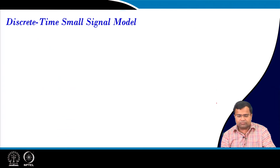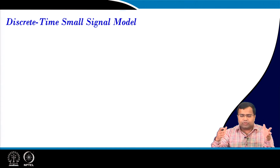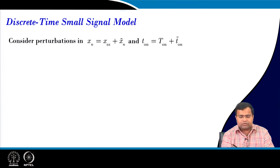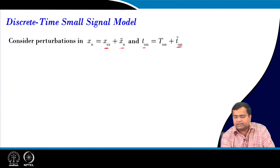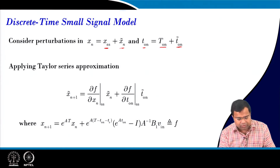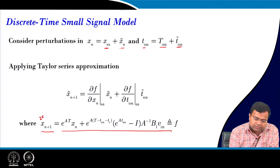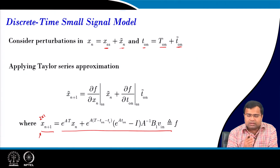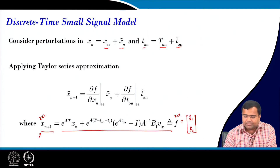We know this expression already. Now, how to derive the discrete time small signal model for this particular case? If we understand this model, we can derive the small signal model for other cases also. First, if we talk about the perturbation X_n, it is around the steady state value. Similarly, the on-time can be perturbed — these are the perturbations and these are the steady state values. We know the large signal model X_{n+1} is a vector, because we are talking about two states: the inductor current and the capacitor voltage. Let us say it is f1 and f2.